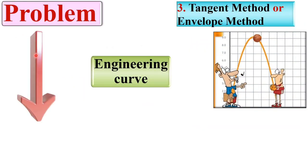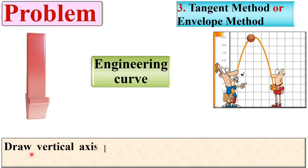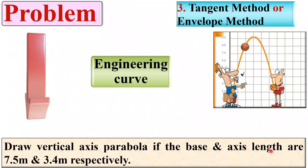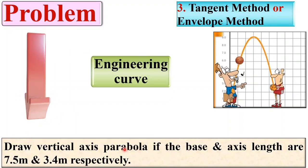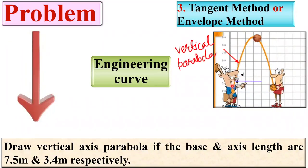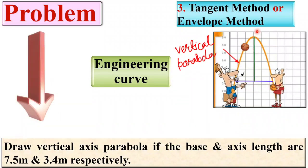Let us see the description of the problem. Draw a vertical axis parabola if the base and axis length are 7.5 meters and 3.4 meters respectively. Here you can see you have to draw the vertical parabola — this is the base and this is the axis length, given as 7.5 meters and 3.4 meters respectively.